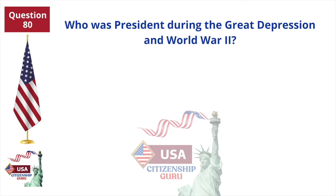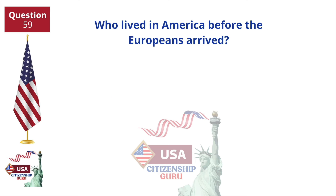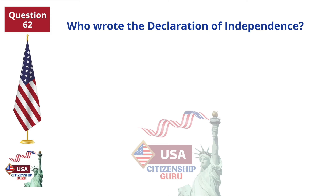Who was president during the Great Depression and World War II? Franklin Roosevelt. Who lived in America before the Europeans arrived? American Indians. Who wrote the Declaration of Independence? Thomas Jefferson.